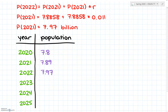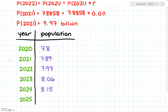Continuing the table: using 2022 to calculate 2023 gives 8.06 billion; using 2023 to calculate 2024 gives 8.15 billion; and lastly, using 2024 to calculate 2025 gives 8.24 billion.